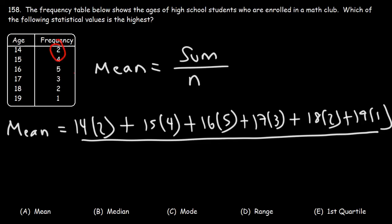So we have 2 plus 4, which is 6, plus 5, that's 11, then 14, 16, 17. So there's a total of 17 students in this club. Go ahead and type this in your calculator.